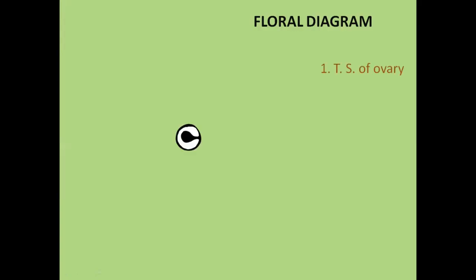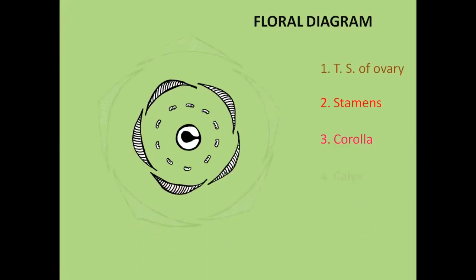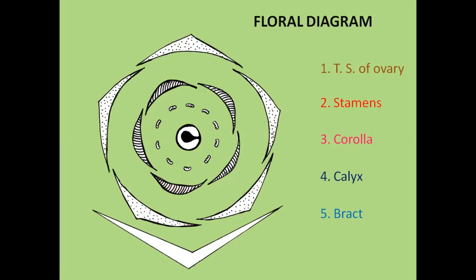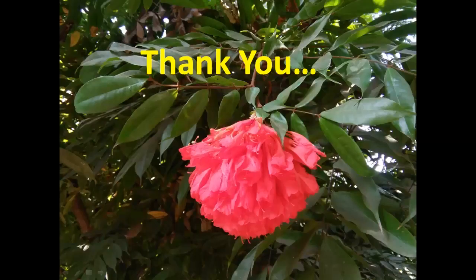Now we will learn how to draw the floral diagram. First, you have to draw a TS of the ovary at the center, then draw the stamens, then the corolla and calyx with respect to their aestivation. Draw proper aestivation of corolla and calyx, then draw the bract. Likewise, you have to design the floral diagram of the given plant. I hope my video is helpful to you during exams as well as daily practical routine. Thank you very much.